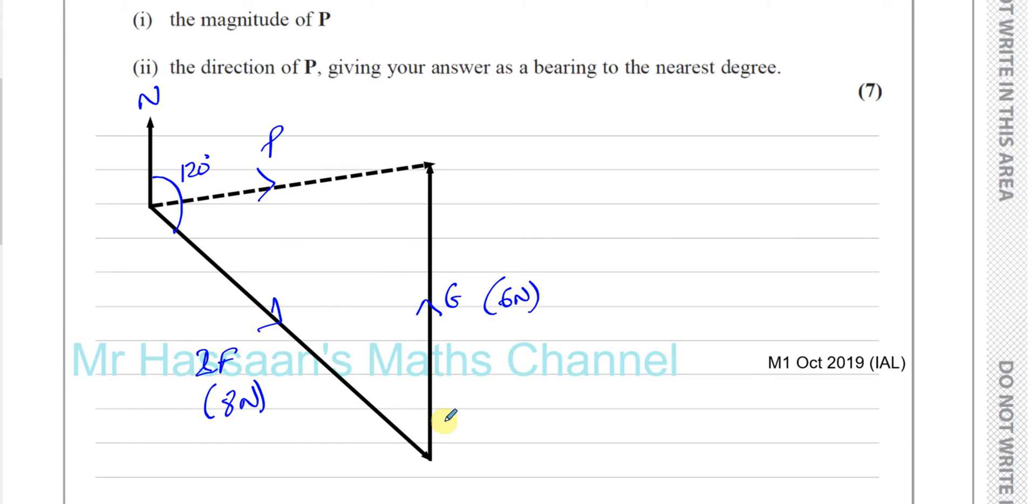So, these two lines are parallel. So, this angle here and this angle here must be supplementary. They add up to 180 degrees because they are called interior angles. They make like a U shape. So, this must be 60 degrees.